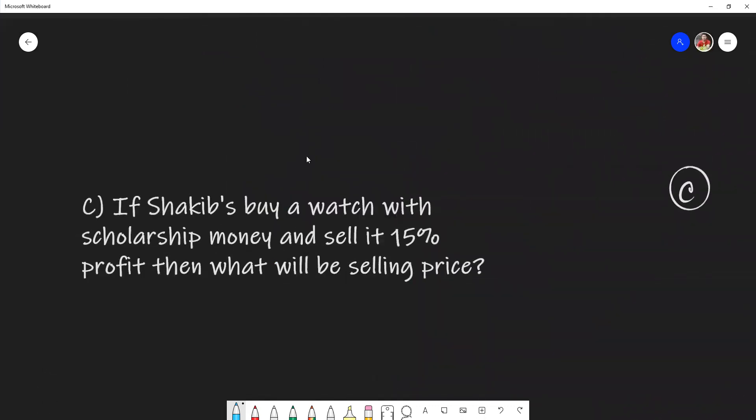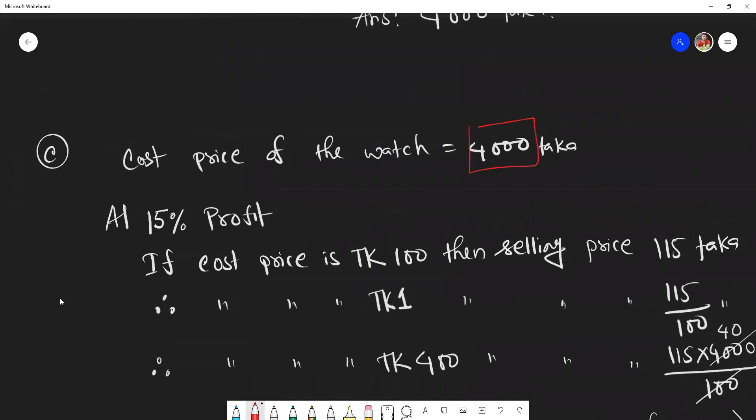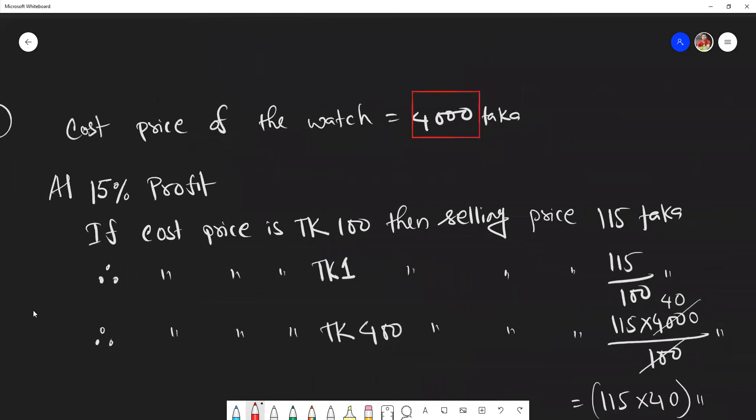Question C: If Sakib buys a watch with the scholarship money and sells it at 15% profit, what will be the selling price? This is a simple question from class 7 standard. Cost price of the watch is 4,000 taka and 15% profit. Using unitary method: if cost price is 1 taka, selling price is 115/100.